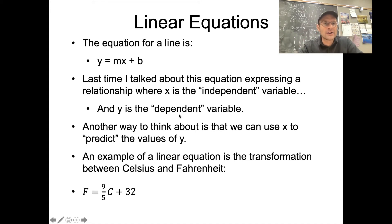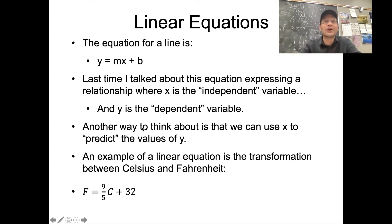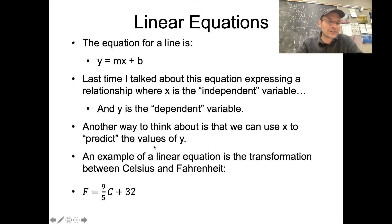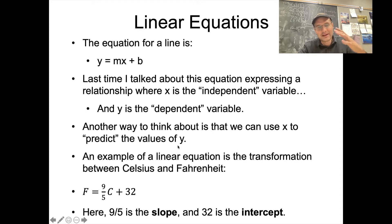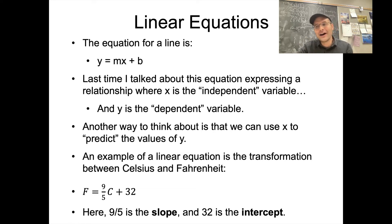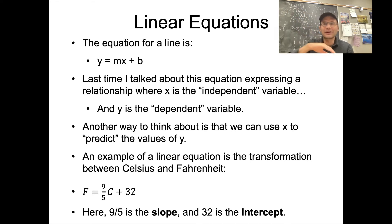In cases like the Celsius-to-Fahrenheit conversion, there's an absolute relationship — if we know the temperature in Celsius, we know exactly what it will be in Fahrenheit with no ambiguity. But in a lot of cases where we collect data with two variables, it won't be absolutely determinative. For example, there's probably a relationship between a speaker's height and their F0, but it's not absolute. Normally, taller speakers have longer and thicker vocal folds and tend to have a lower F0, but that's not always the case. You can make a prediction, but you wouldn't expect to be absolutely right every single time.